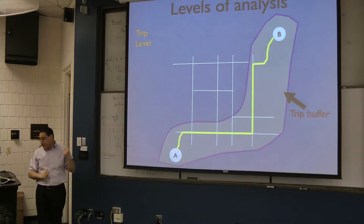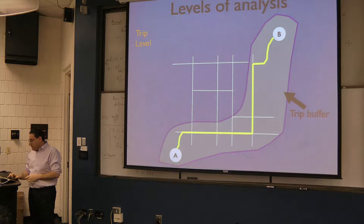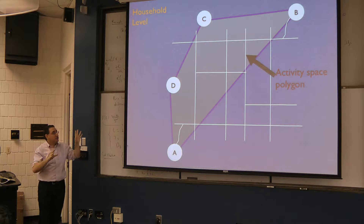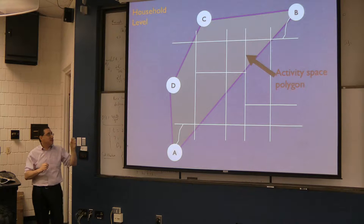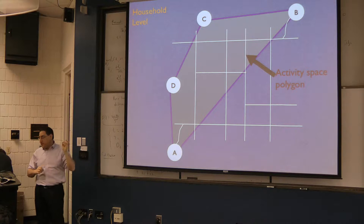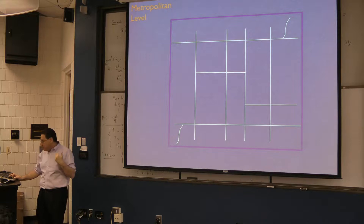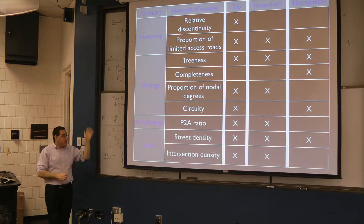We're going to look at this at the level of the trip — from A to B — and at the household level, considering all the activities people engage in during a day. For a household, we define an 'activity space': if you live at A, go to work at D, shopping at C, visiting friends at B, then return home — that geography is called an activity space. We can also look at this at the metropolitan level. Network structure measures include hierarchy, topology, morphology — such as the perimeter-to-area ratio — and scale, like street kilometers per square kilometer.